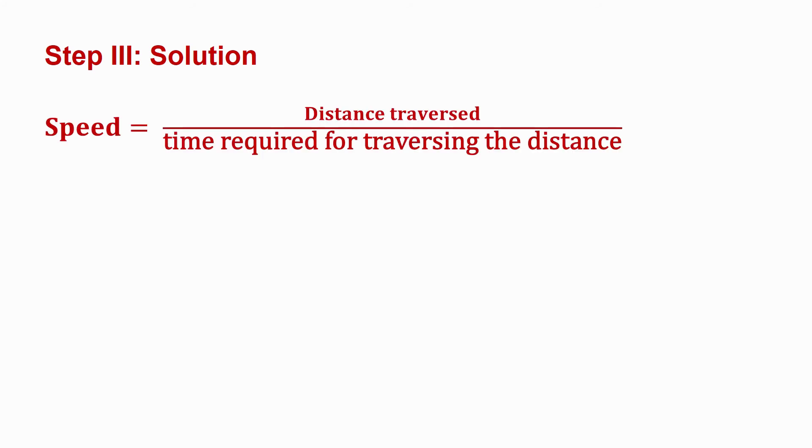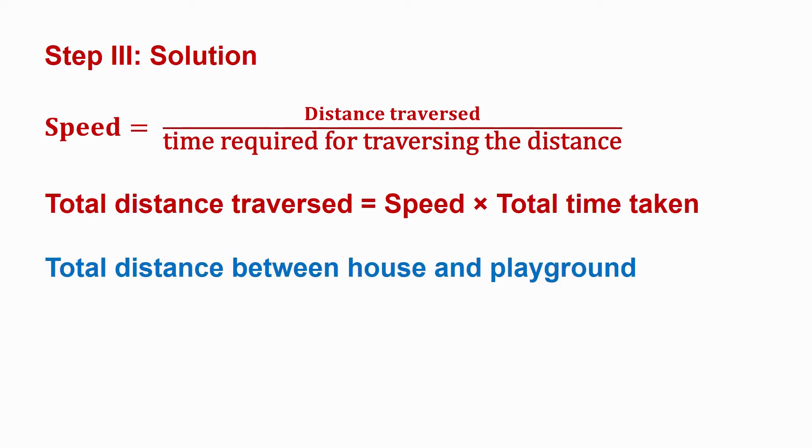Step 3: Solution. First, we have to write the formula of speed. Speed is equal to distance traversed divided by time required for traversing the distance. Now, we write the formula of speed in terms of distance. Total distance traversed is equal to speed into total time taken. Now, put the values given in the problem. Total distance between house and playground is equal to 5 meter per second into 1800 seconds. Thus, the total distance between house and playground is equal to 9,000 meter.